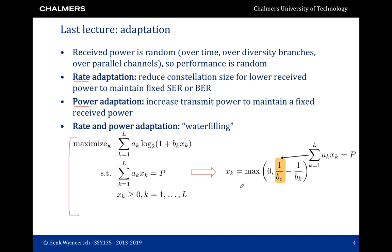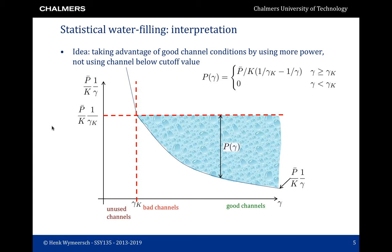The water filling solution involves also a constraint which must be met in terms of average power or total power. We saw two variations of water filling: statistical water filling and deterministic water filling.